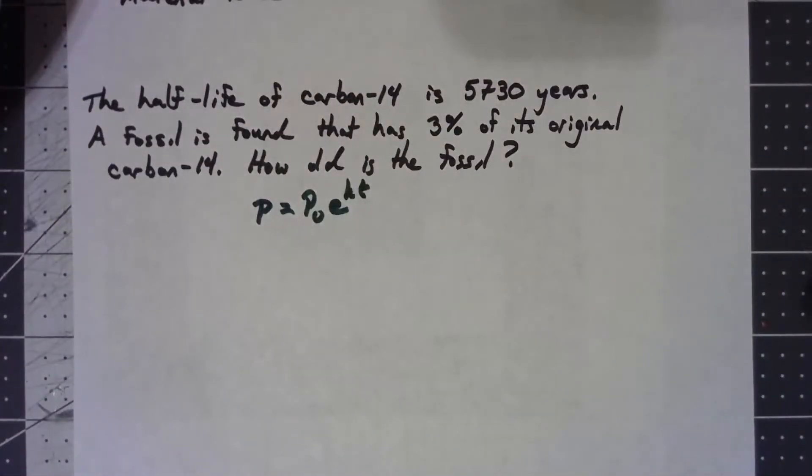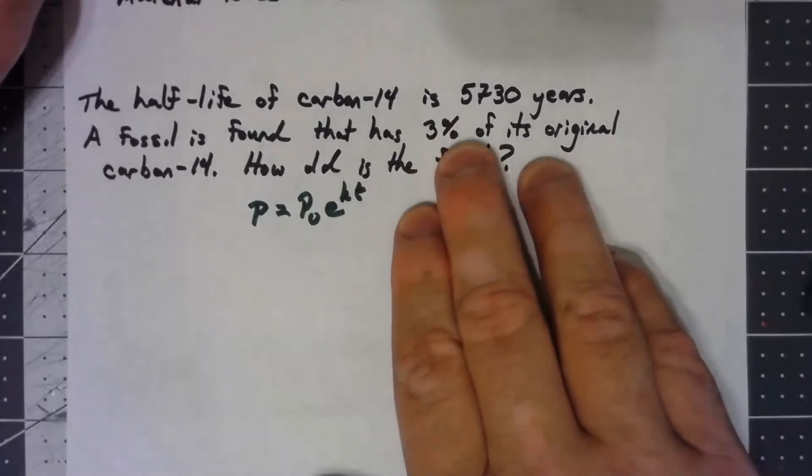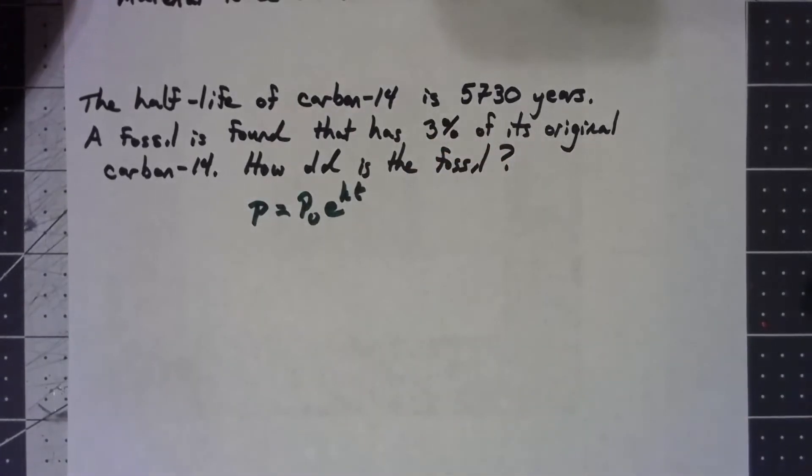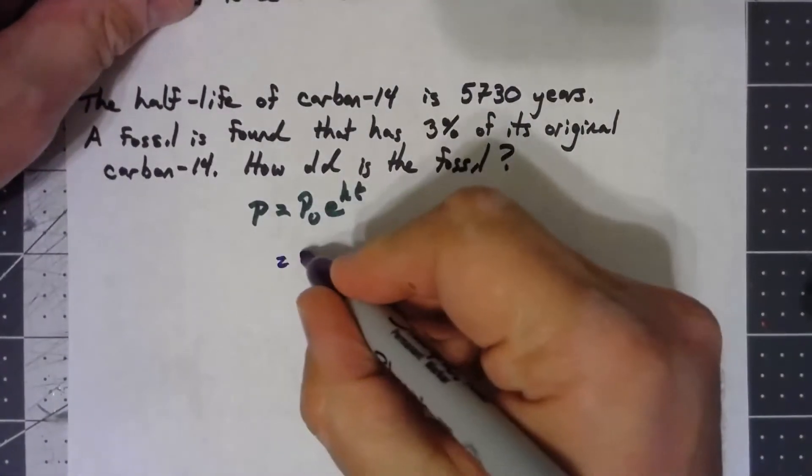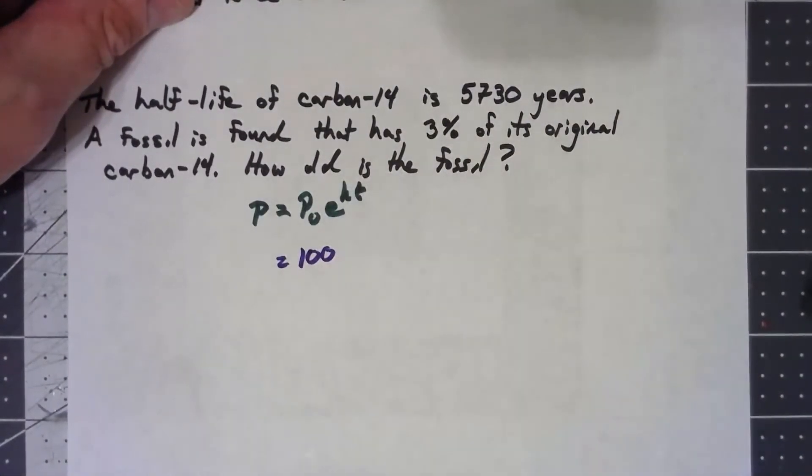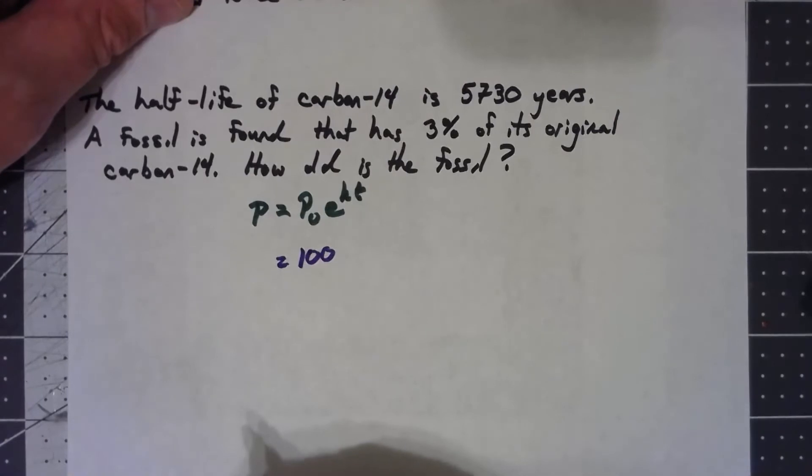But the problem is it doesn't seem like there's any numbers here for what the populations are. It doesn't actually mention how much carbon-14 we have, but that's okay because we can just go ahead and use it in terms of percentages. The original amount it started with is a hundred percent. So I'll just put in 100 for the population.